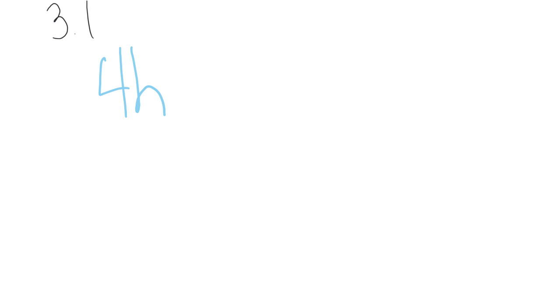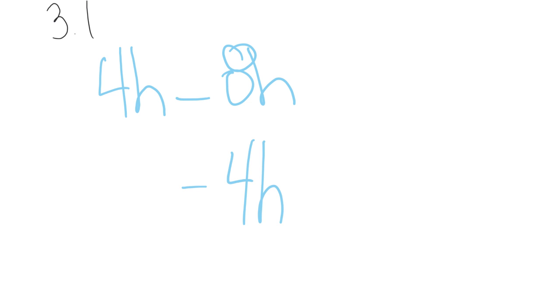So the next thing was when we would be asked to identify what the expression is if you simplify it — so if you combined your like terms. If I have the expression 4h minus 8h, those are both like terms. They both have an h to the power of 1, so I can just combine those. 4 minus 8 gives us negative 4h.